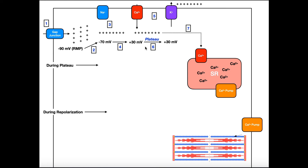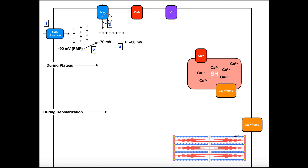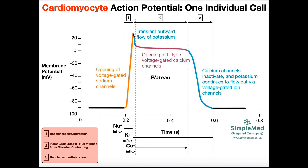Looking at the action potential diagram: notice from roughly rest we have this rapid depolarization due to the opening of voltage-gated sodium channels, bringing the membrane potential from a very negative value to a fairly positive value — that corresponds with the opening of the voltage-gated sodium channel causing membrane potential to go from about negative 70 to positive 30. Right when we get to the peak, there are really two channels that open around the same time — one is a potassium channel and the other is a calcium channel. Potassium channels open and allow potassium to efflux — potassium, a positively charged ion, moves out of the cell.